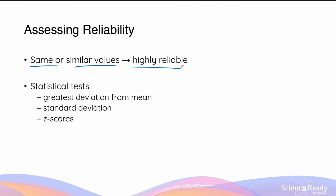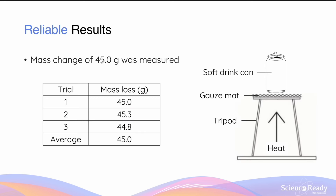When assessing reliability, the simple rule is: if you have the same or similar values and data, the results will be considered as highly reliable. Most of the time you can eyeball whether the results are reliable, but reliability can also be quantitatively assessed using various statistical tests — commonly the greatest deviation of a data point from the mean, standard deviation, or z-scores from a z-test. These statistical tests will be covered in their own separate videos.